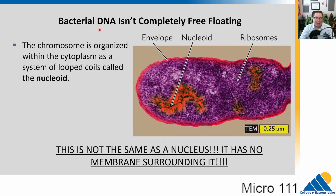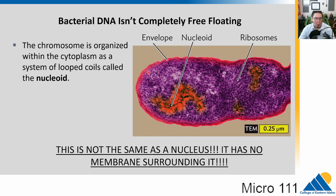The bacterial genome is DNA — a genome is all of the DNA in a cell. Bacterial DNA is not just completely free-floating; it actually organizes itself into a region that we call the nucleoid. This is different from the nucleus — the nucleus has a membrane and is found in eukaryotes. In a prokaryote, the nucleoid is just a region where the DNA hangs out in a clump, looped and coiled up on some proteins. There is no membrane surrounding this area, so nucleoid and nucleus are different.